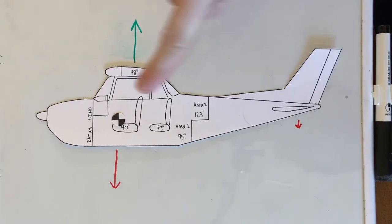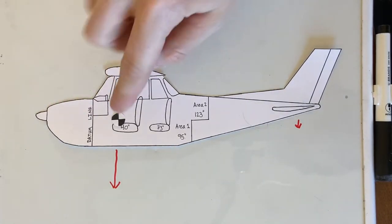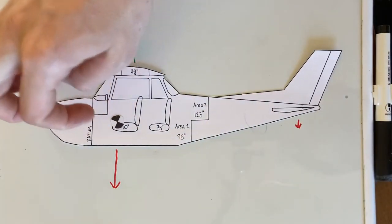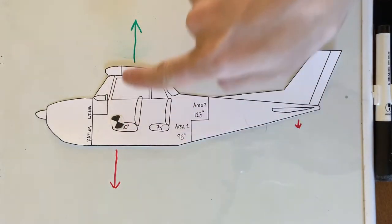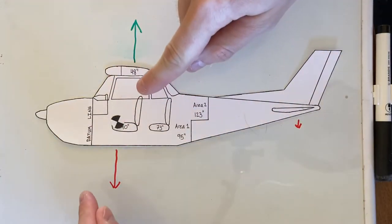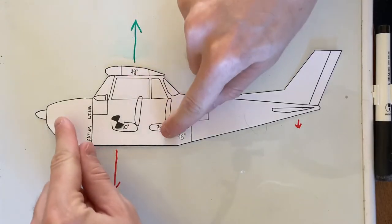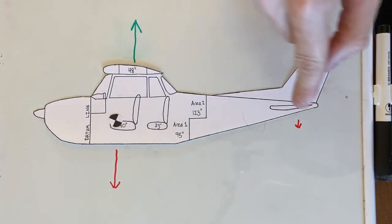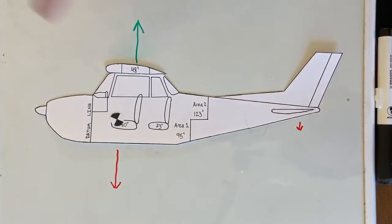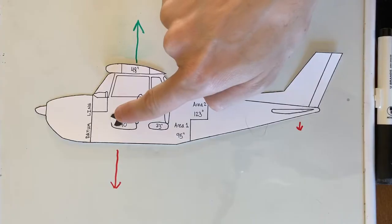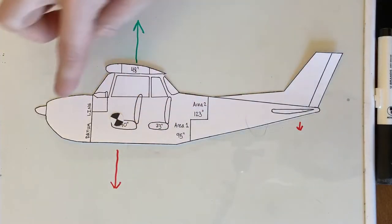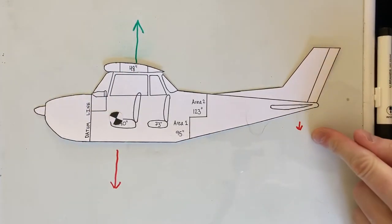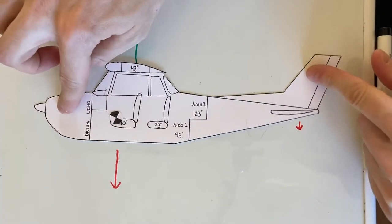The further forward an airplane's center of gravity is, the greater the nose-down tendency it will have. Here the center of gravity is in front of the center of lift, so gravity pulls down and lift pulls up and it wants to drop the nose. That's why we have the horizontal stabilizer to provide downforce to keep the nose up. When the center of gravity is relatively close to the center of lift, the nose-down tendency is not super large, and we only need a small downforce from the tail to keep the nose from dropping.